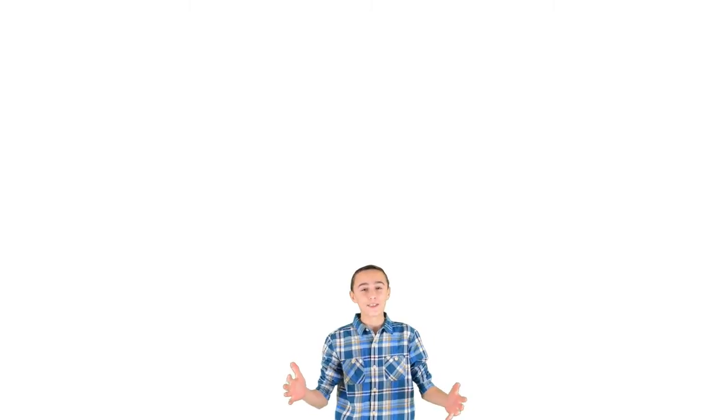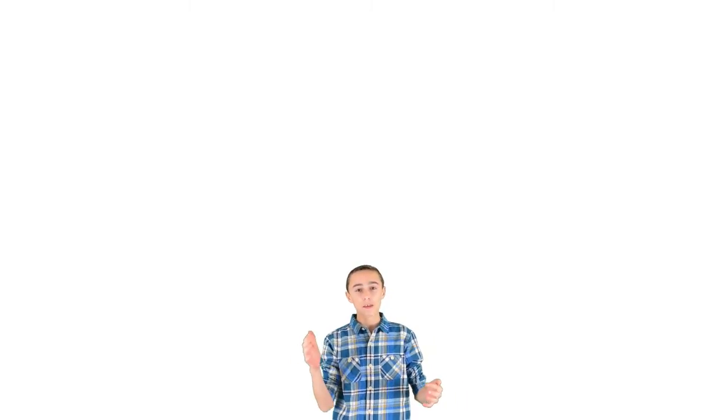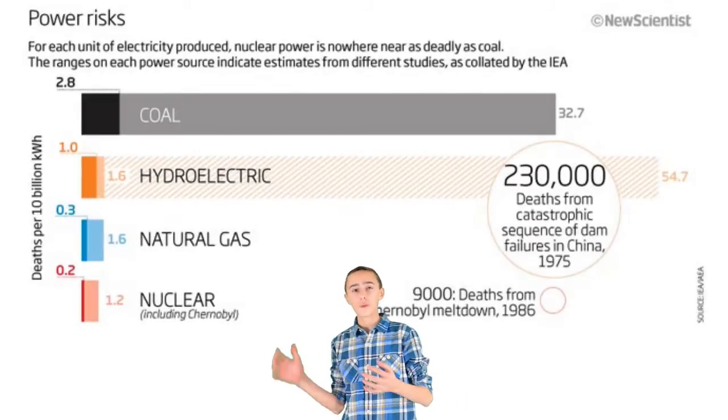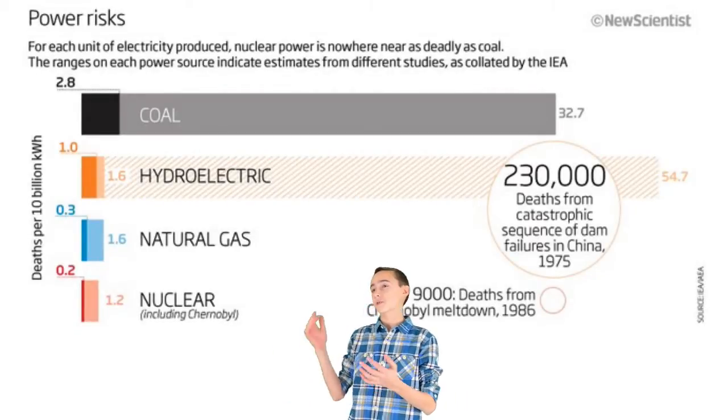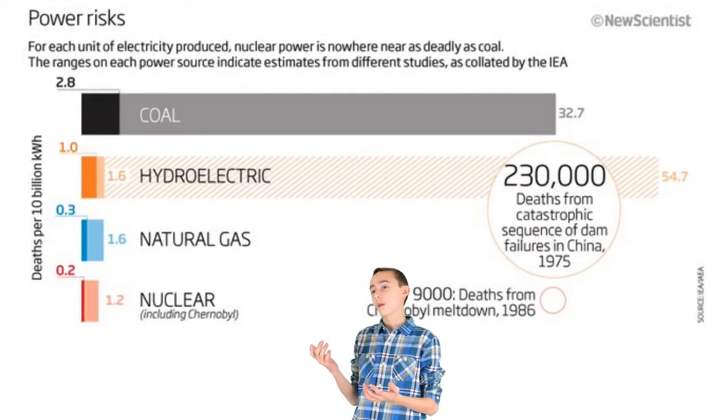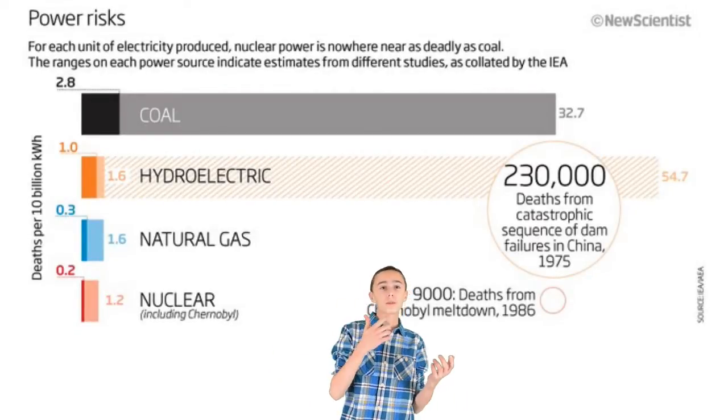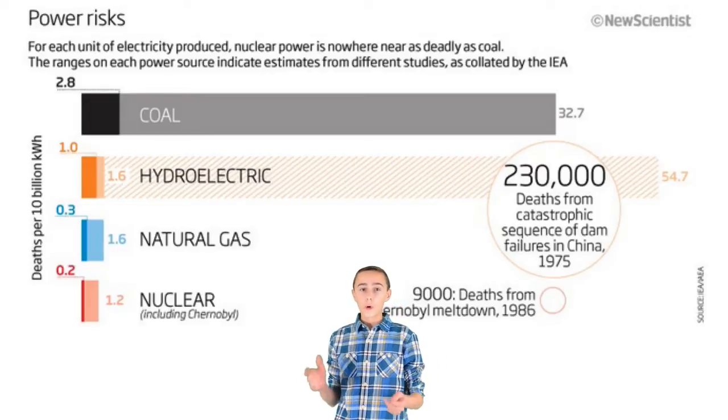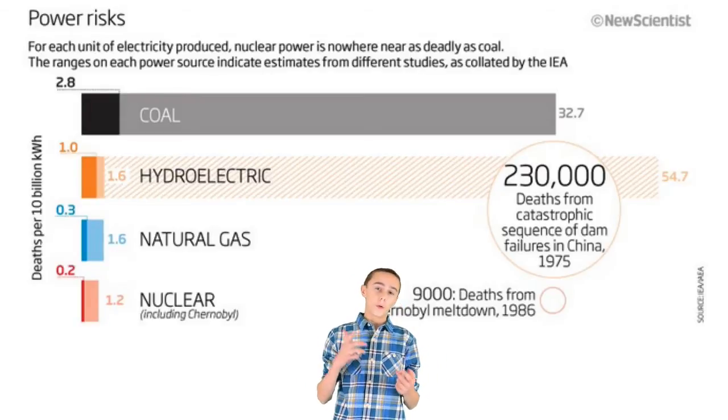Nuclear is consistent — 24/7, completely reliable. Although it is not well known, there are actually significantly fewer deaths per year from nuclear power, even when you include disasters like Chernobyl and Fukushima, rather than from coal and fossil fuel alternatives.